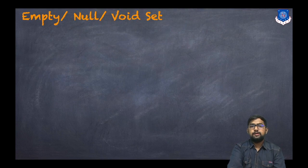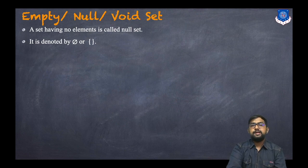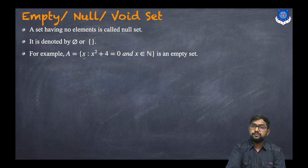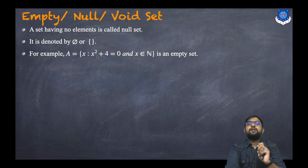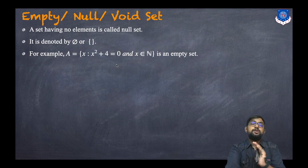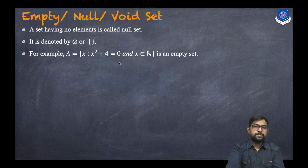An empty, null, or void set is a set having no elements. It is denoted by φ or simply {}. For example, {x : x² + 4 = 0, x ∈ N} is an empty set because the roots of x² + 4 = 0 are ±2i, which are complex numbers and do not belong to the natural numbers.